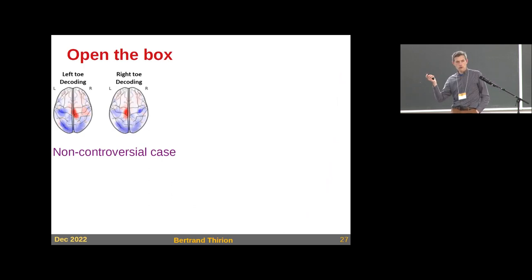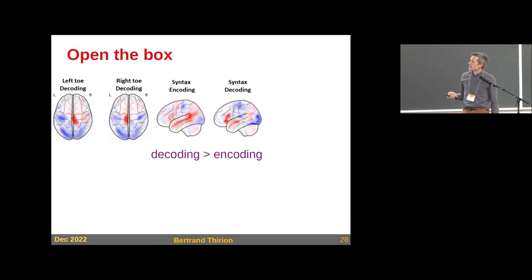We also provide the spatial patterns used to decode each term that we could probe. When we open the box and see what's happening, some cases are super easy, like motor regions are very easy to identify with 98% accuracy. Interestingly, when we look at the decoding map for syntax, we can look at the encoding map, which is a correlate of doing syntax processing, or the decoding map, what in the brain tells you the subject is doing a syntax task and nothing else. With the decoding task, we have more anterior regions in the STS and more of Broca's area to decode this term, which seems more consistent with the literature. This tells us decoding is a good thing to do.